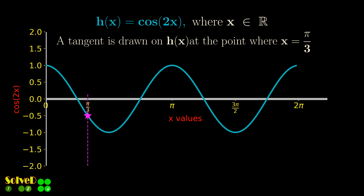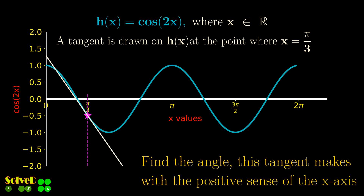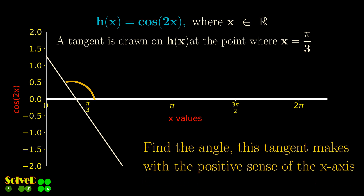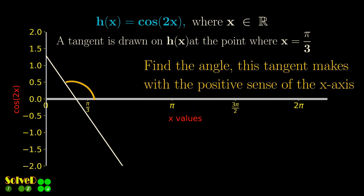A function is given, and a tangent line is drawn at a given point. We need to find the angle this tangent makes with the positive sense of the x-axis.